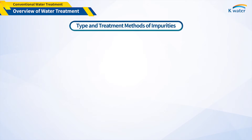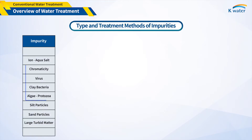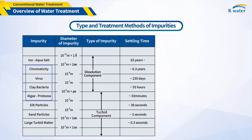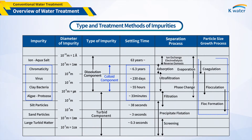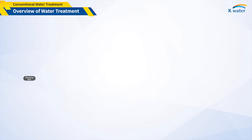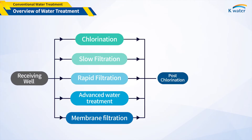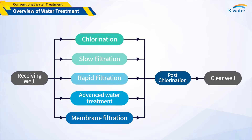Applicable water treatment techniques — such as sediment, floating, filtration, absorption, etc. — can be determined by the size and concentration of target impurities, such as suspended solids, viruses, and bacteria and ionic substances. In general, the water treatment process can be customized by combining effective treatment technology to achieve the desired water quality, such as adding chlorine. It is important to share the tasks among unit processes to ensure efficient water treatment.